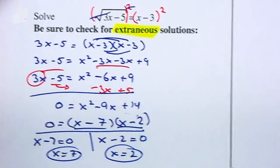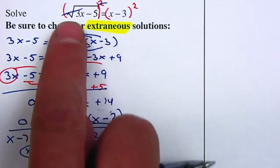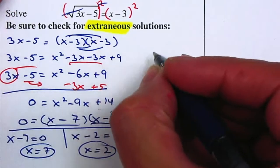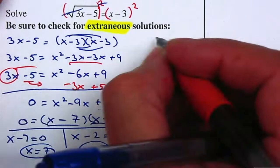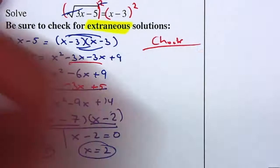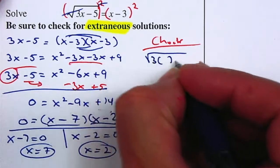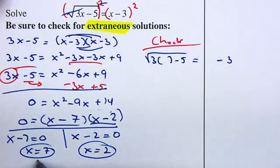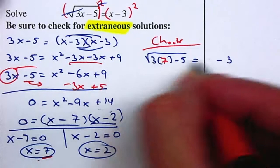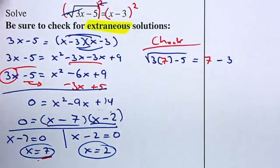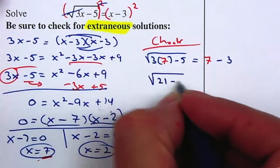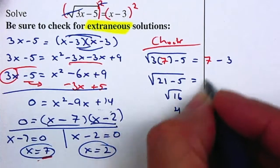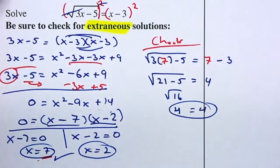And now I want to check to see if they both are correct. So I'm going to go back to my original equation, and first I'm going to plug in a 7 to see if it's true. The square root of 3 times 7 minus 5 is equal to 7 minus 3. That gives me 21 minus 5. Square root of 16 is 4. On the right hand side gives me 4. So therefore, that one's fine.